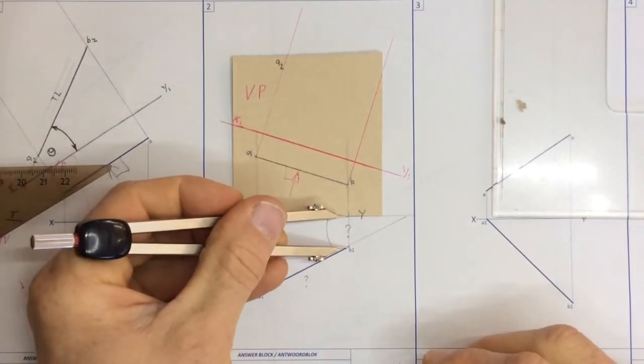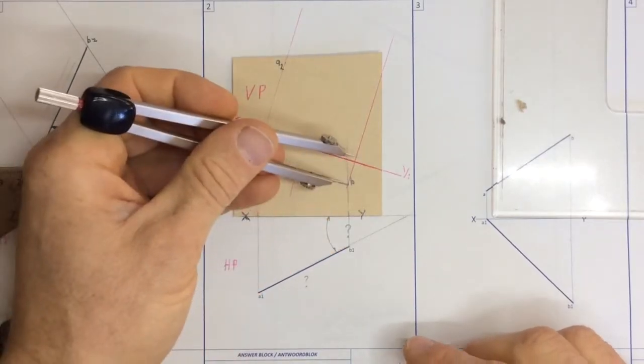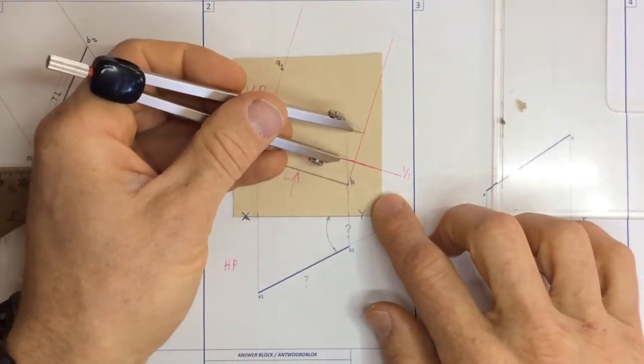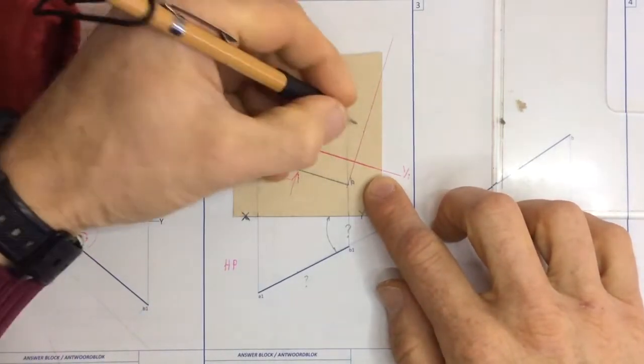From the XY-axis to B1 over here on my horizontal plane. Again, going up, going up to the new XY-axis and place that down as B2.